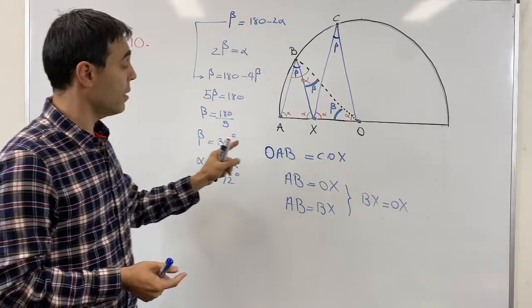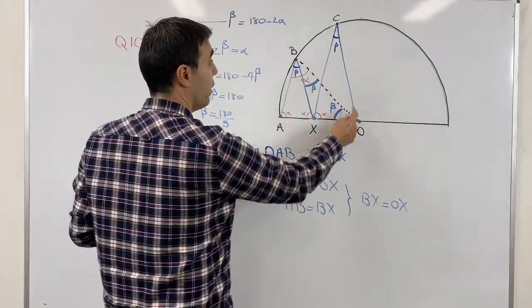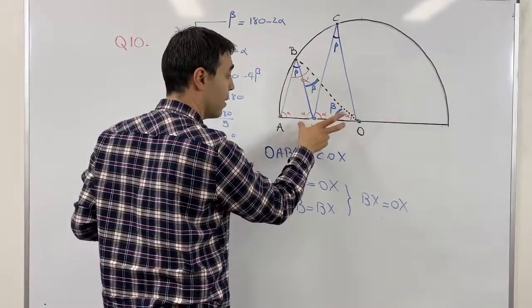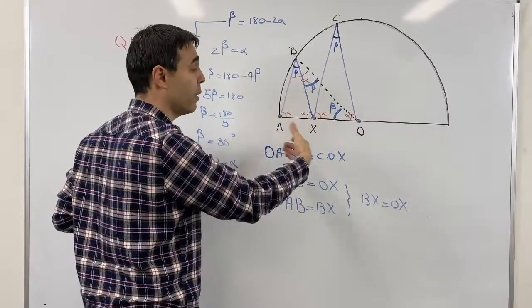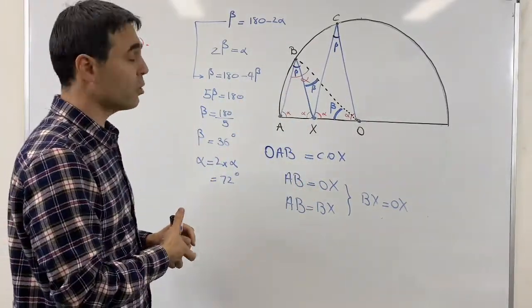Now, another thing in the question, as I said, it has a bonus part. What if instead of two isosceles triangles, we had three isosceles triangles? And what if we had four or five or up to n? Can you solve that?